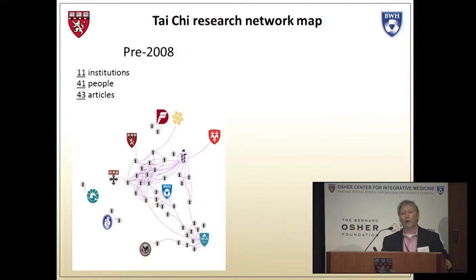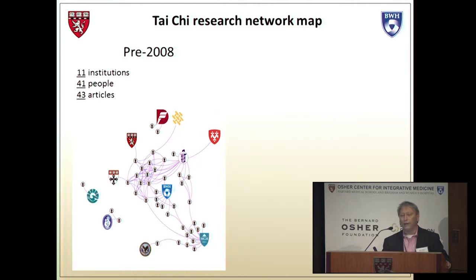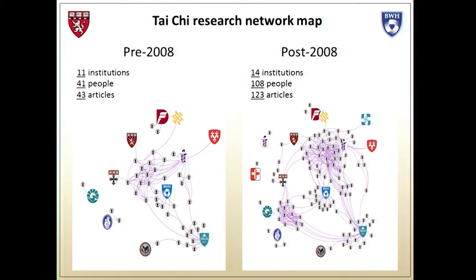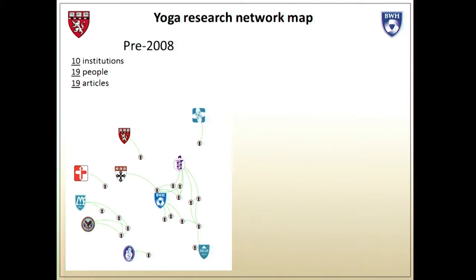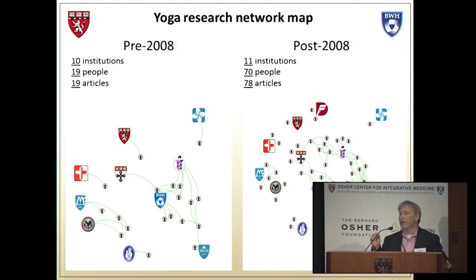In addition to creating this map, as Elena said, we're thinking about what happens when a network becomes aware of itself—it becomes a resource for collaboration and linking. We can monitor how the network has evolved over time. For example, in Tai Chi research, we can create a snapshot before 2008: 41 researchers, 11 institutions, 43 peer-reviewed articles. Since then, the map has grown substantially—108 people, 123 articles. We can do the same for yoga research and anchor this to initiatives, track NIH funding patterns, and assess whether networks are becoming more connected or focused around key hubs.